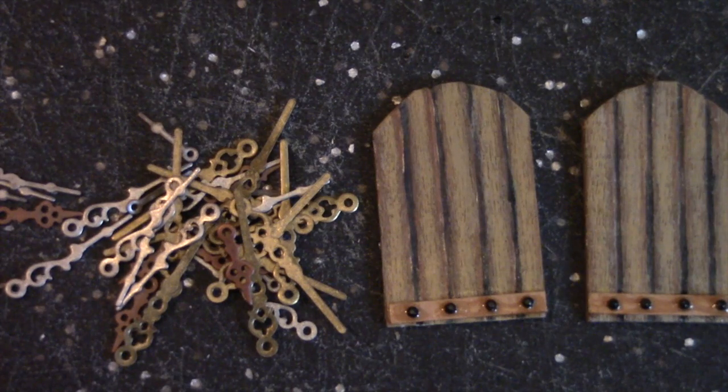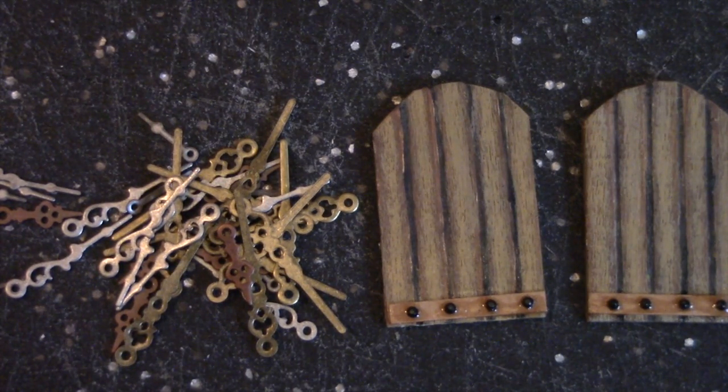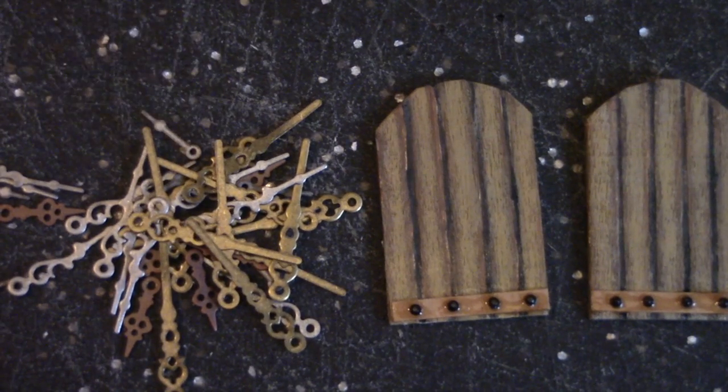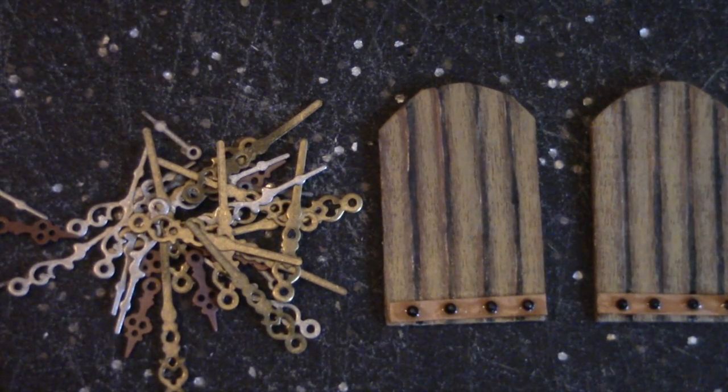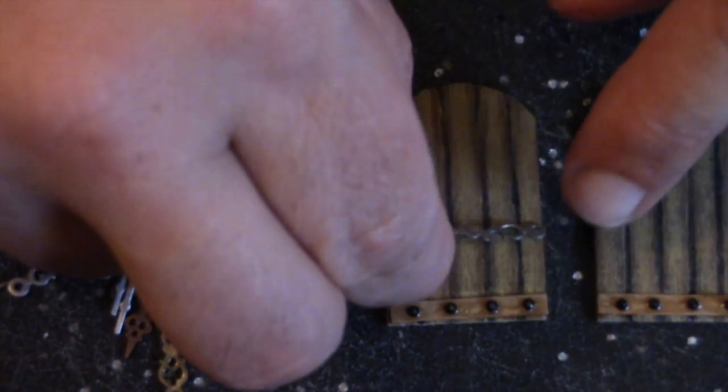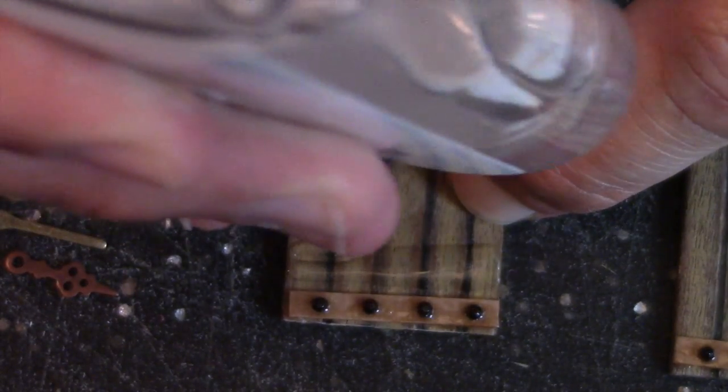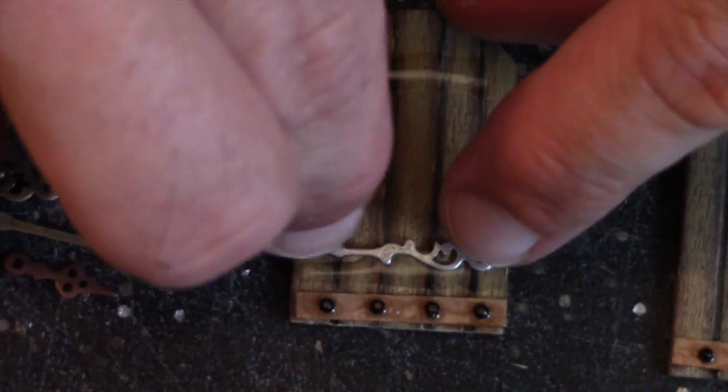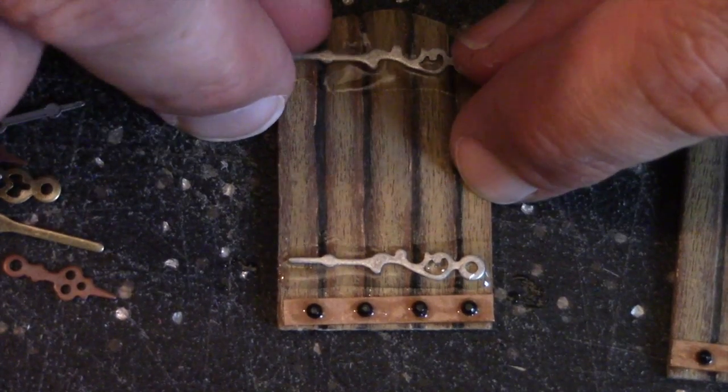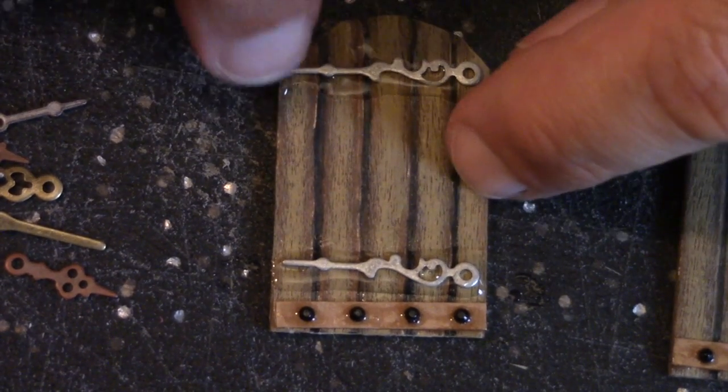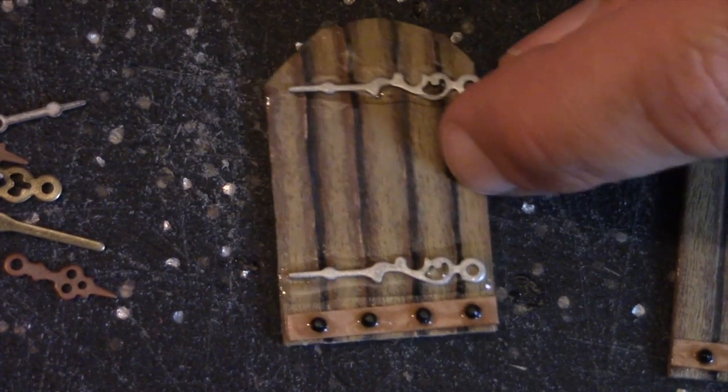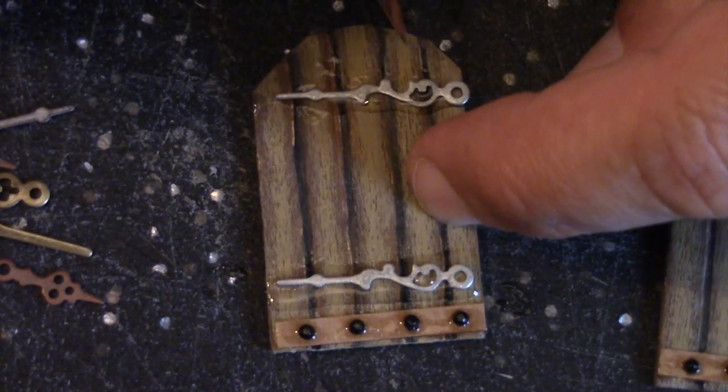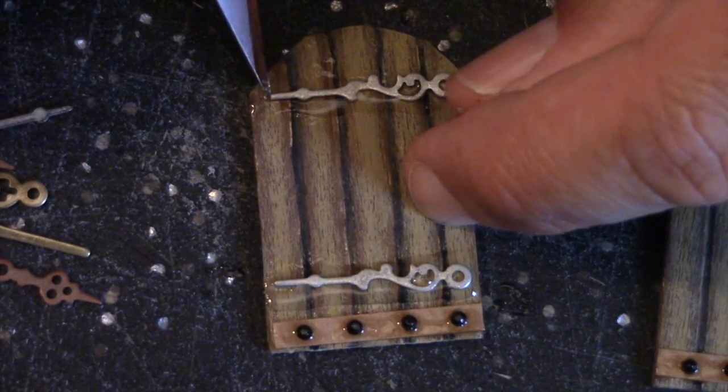In the jewelry aisle of my craft store, I found these things used for making jewelry, and it occurred to me that they would make excellent ornamental banding for my door. Using my glue, I'm going to put one of these at the top and the bottom of the door. The great thing about this type of glue is that we have a few minutes to move it around, to get it where we like it, moving it around into place with our X-Acto knife.